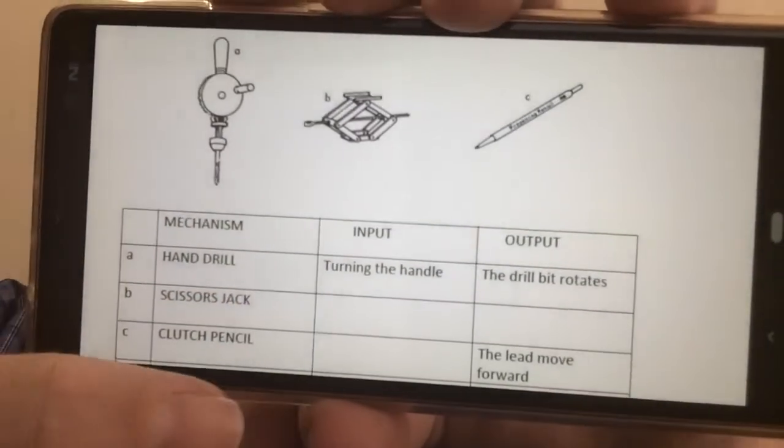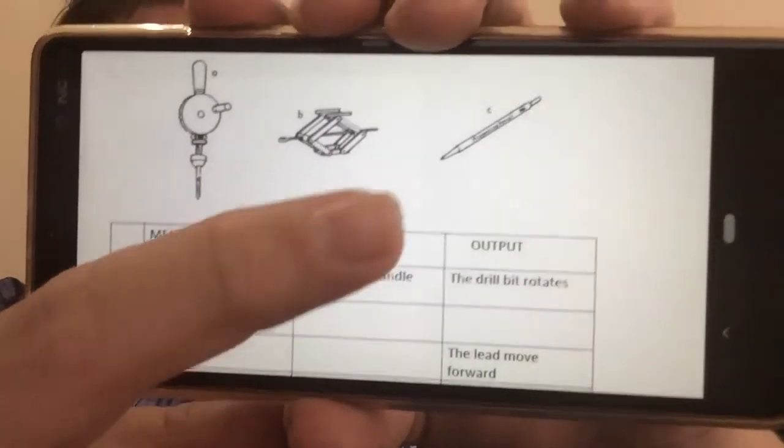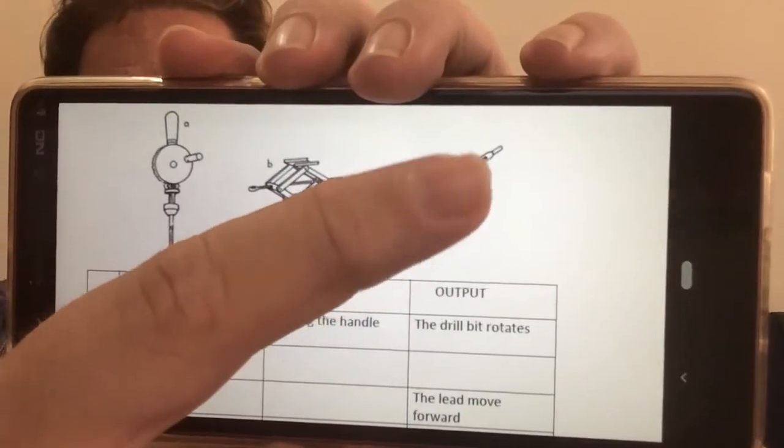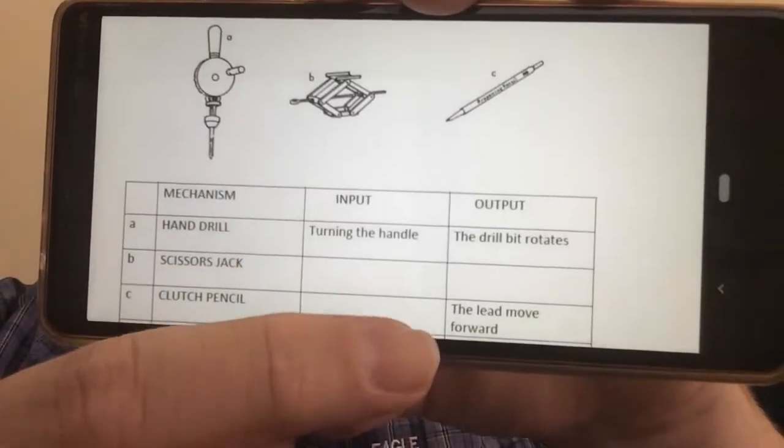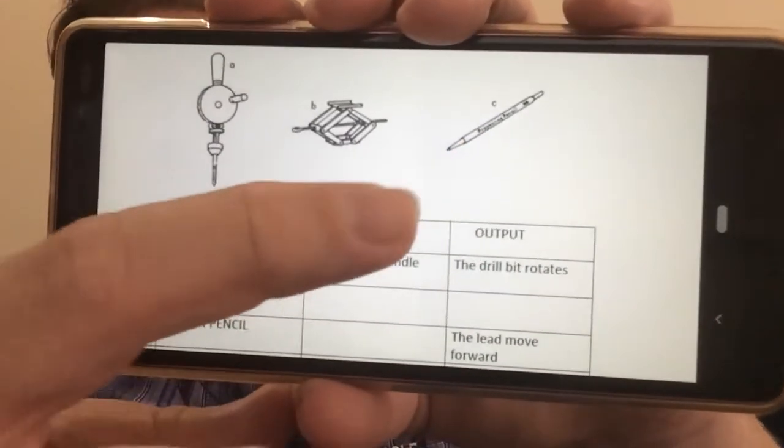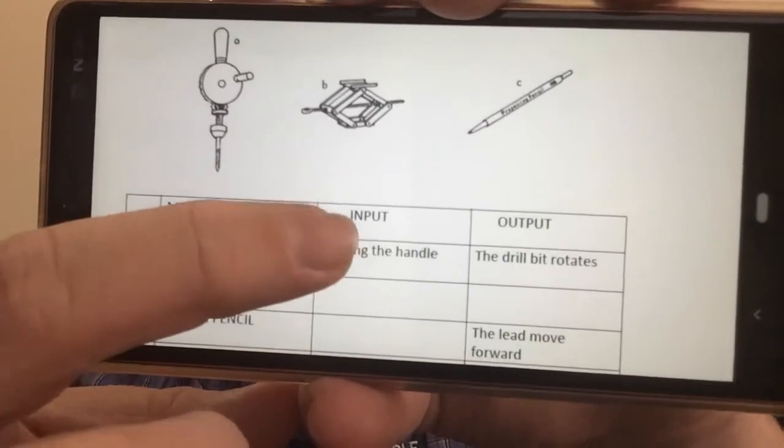And then another simple example, there's a clutch pencil. If you push the button on the back of the clutch pencil, which is the input, what happens? The lead moves forward. The lead comes out.